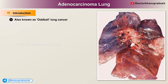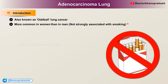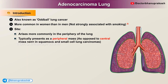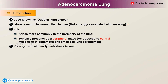Lung adenocarcinoma is the oddball lung cancer. It is more common in women than in men and is not strongly associated with smoking. It also arises more commonly in the periphery of the lung, typically presenting as a peripheral mass, as opposed to the central locations seen in squamous and small cell lung carcinomas. Adenocarcinomas grow more slowly than squamous cell carcinomas but metastasize earlier.